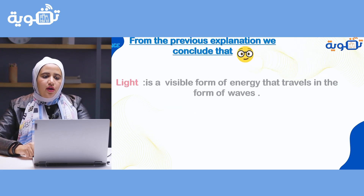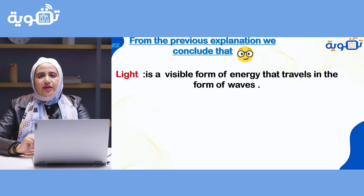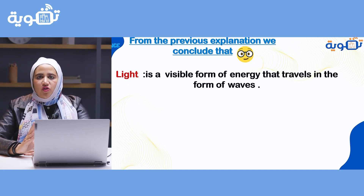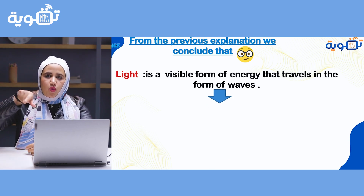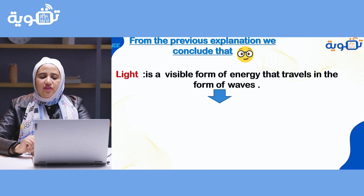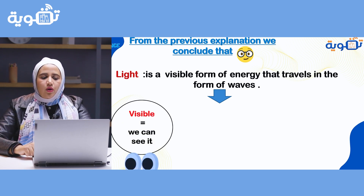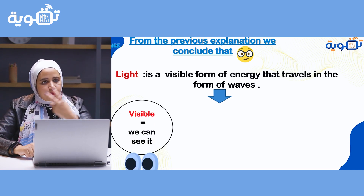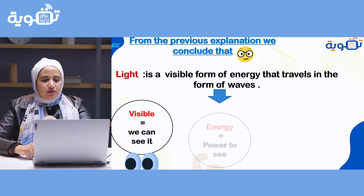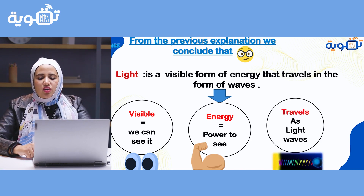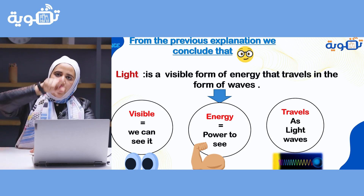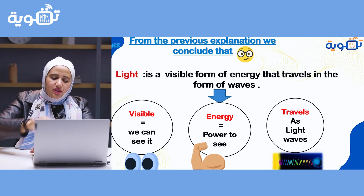From the previous explanation, we conclude that light is a visible form of energy — meaning we can see it — that travels in the form of waves. What is the meaning of visible? We can see it. Energy gives us the power to see. Light travels as light waves.